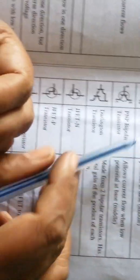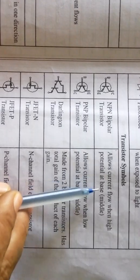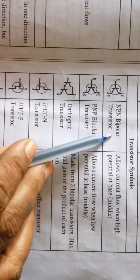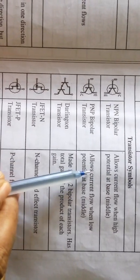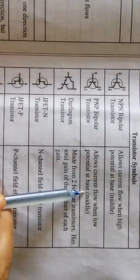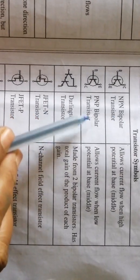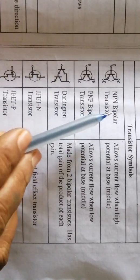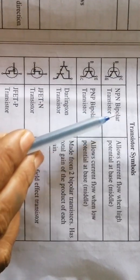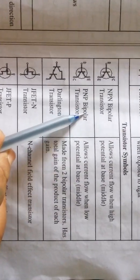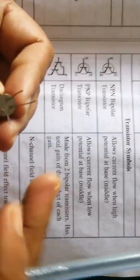An NPN transistor turns on (allows current flow) when a high potential is at the base. A PNP transistor turns on when a low current is at the base. This is the main difference between NPN and PNP transistors.